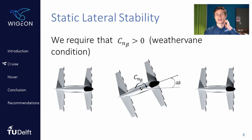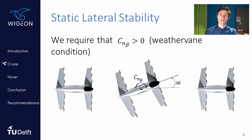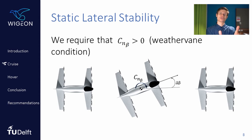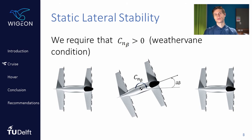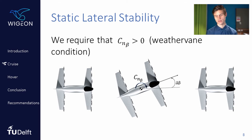Now let's look at static lateral stability. This has a different criterion called the weathervane condition — that is, if the aircraft turns slightly, it tends to turn back into the incoming airflow. This isn't as closely related to the centre of gravity location, but it still plays a role because the vertical tail and rudder need to have a sufficiently large moment arm to achieve this kind of stability.